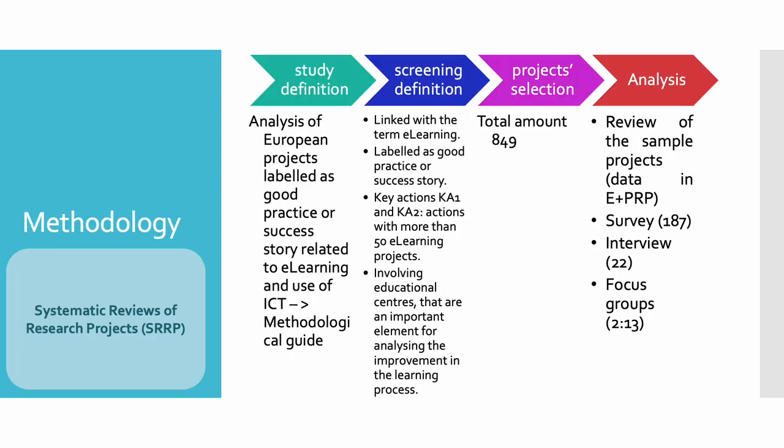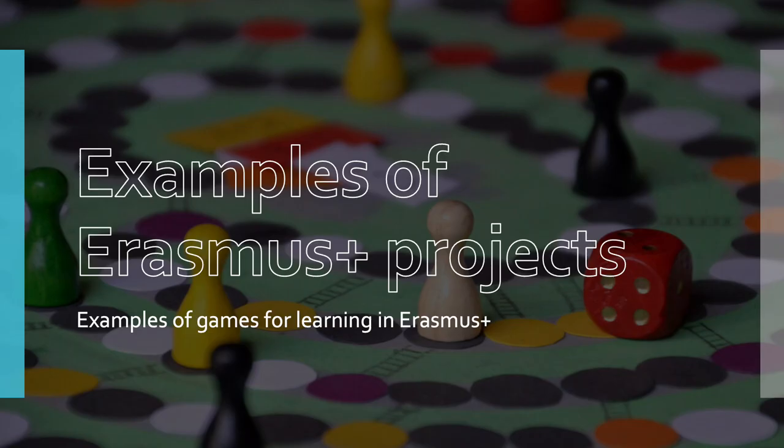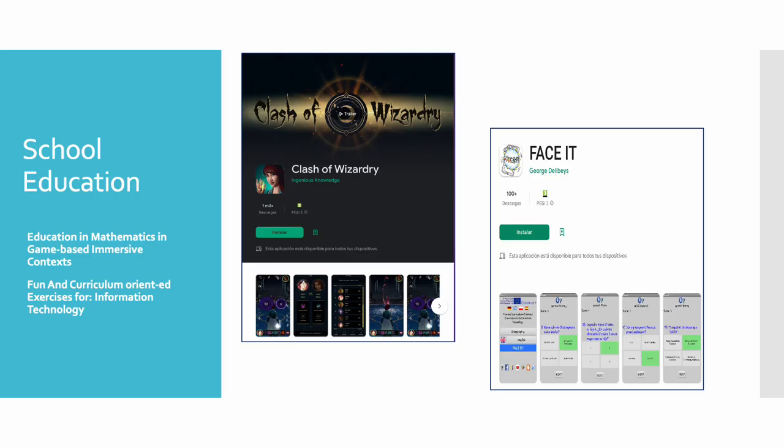Regarding the methodology for the research, it follows the guidelines specified in systematic reviews of research projects, which implies four stages: study definition, screen definition, project selection and analysis. Presently we are in the analysis phase. As a result of this process, five projects have been selected for this article. Let's go to review the projects chosen.